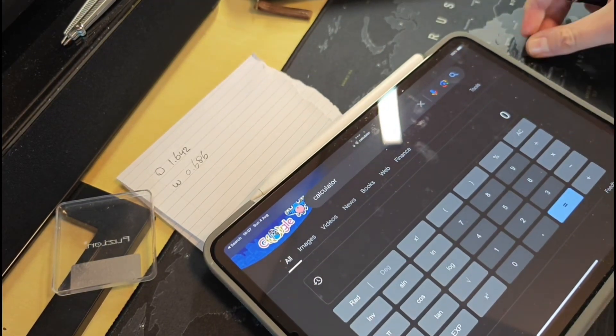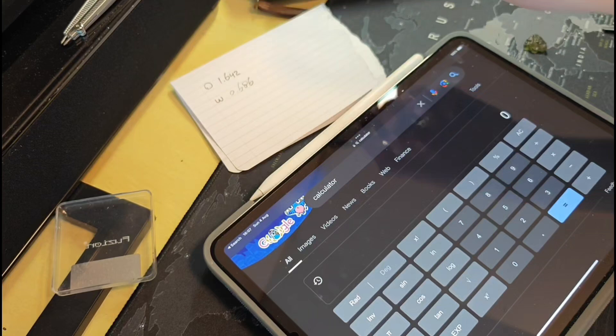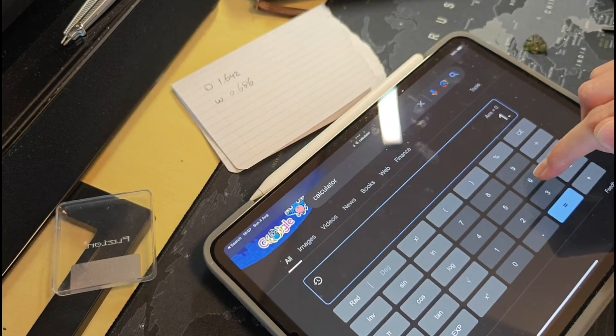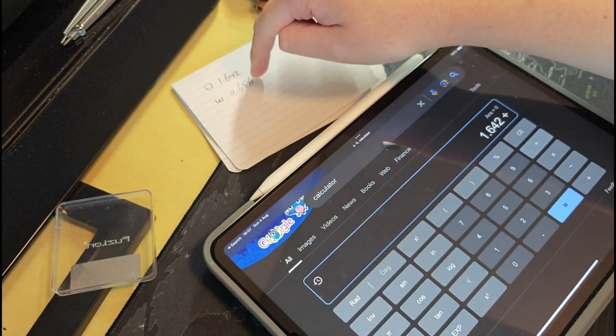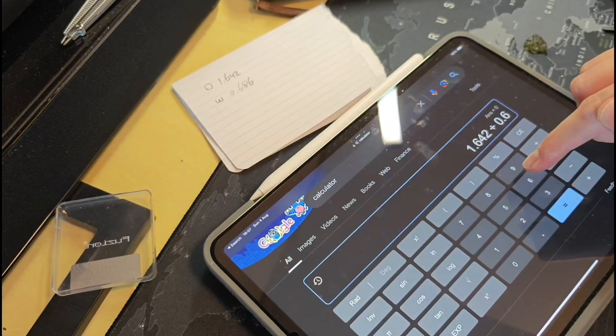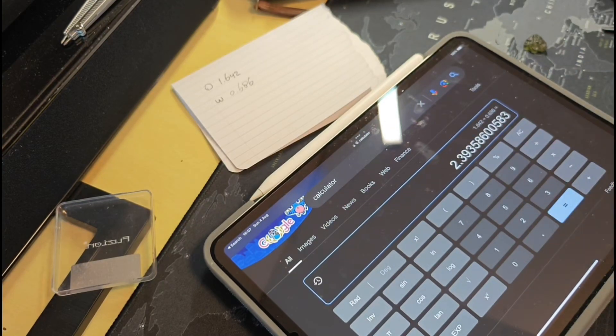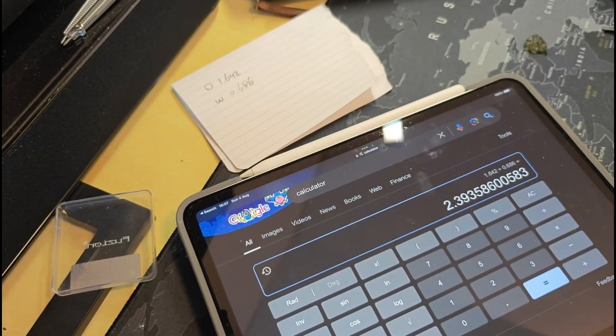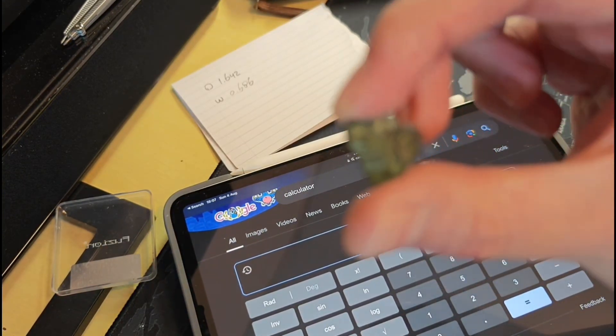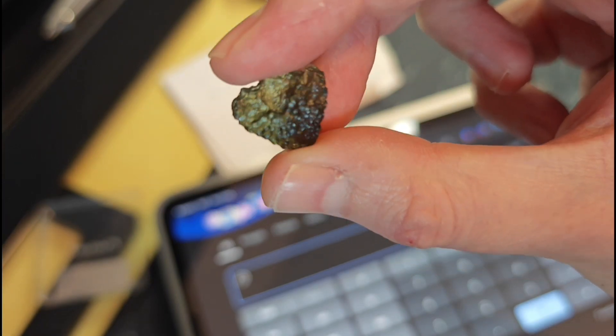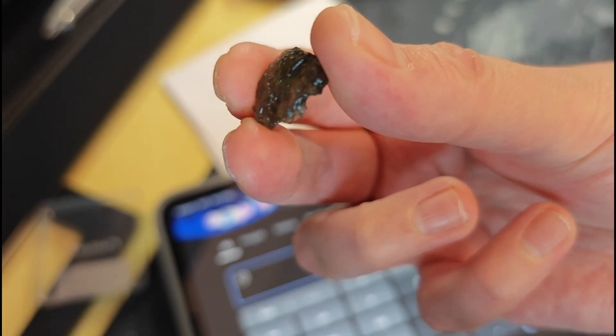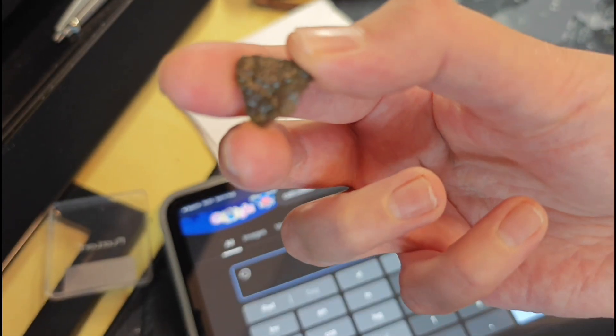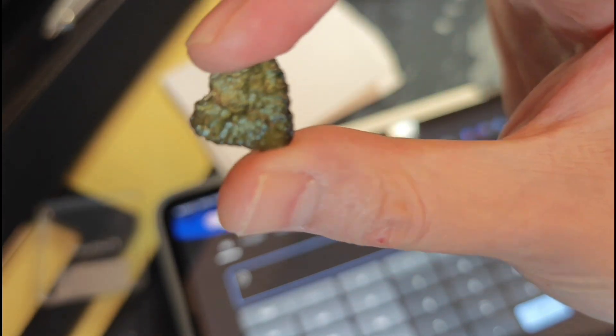So we take the dry weight in grams, 1.642, and then you divide by the weight in water, 0.686, and then you calculate, and here you can see the number. It's almost like exactly 2.40. So this beautiful little triangle shape, almost looks a little bit like an arrowhead, like a carved arrowhead. This is a 100% real piece of Moldavite.